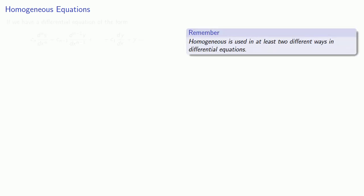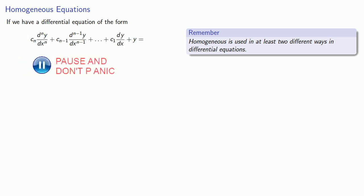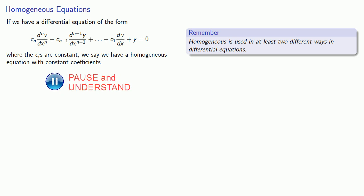In this particular case, if we have a differential equation of the form this horrible mess equal to zero, where our c_i's are constant, we say that we have a homogeneous equation with constant coefficients. It's homogeneous because all of our non-zero terms are either y or a derivative of y, and constant coefficients because our coefficients are, well, constant.